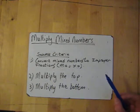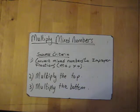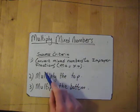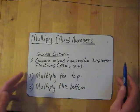You don't even need to find your common denominators. You're just multiplying the top numbers, and then you're multiplying the bottom numbers. So let's have a go. Convert the mixed numbers into improper fractions. Multiply the top, multiply the bottom. Let's have a go.